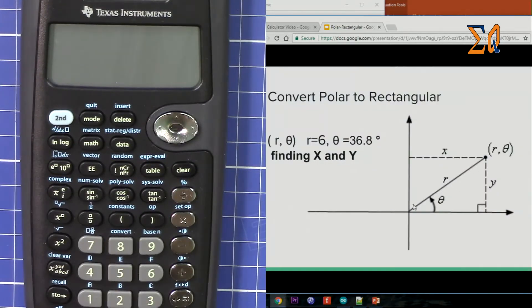This one has magnitude or radius which is R and theta. We have these two values: R equals 6 and theta equals 36.8 degrees, and we want to find the corresponding X and Y values.